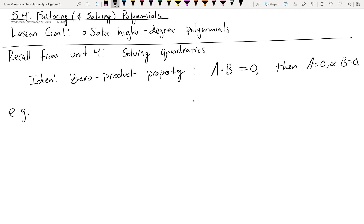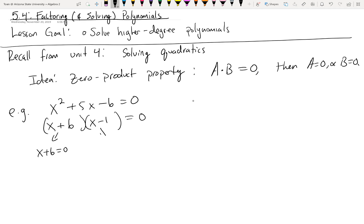For example, if I asked you to solve x² + 5x - 6 = 0, the idea was to transform this quadratic trinomial into two sets of parentheses — that's the idea of factoring. In this case, it would be (x + 6)(x - 1). Then you set each factor equal to zero, giving you x = -6 and x = 1. That's what we did in Unit 4.